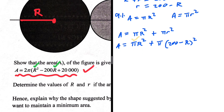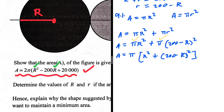We have π and π, so we can take that as a common factor. The area will be equal to π times the quantity R² plus (200 minus R)². So we have π as a common factor, leaving us with R squared, and then we need to expand (200 minus R)².